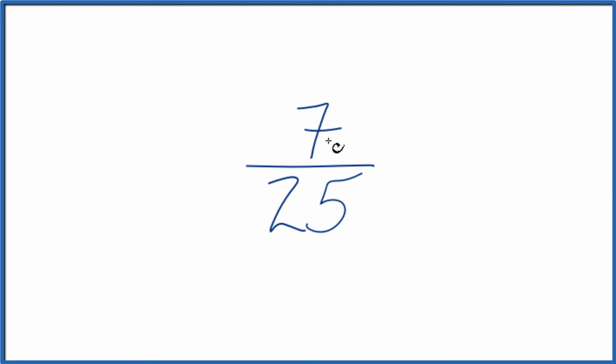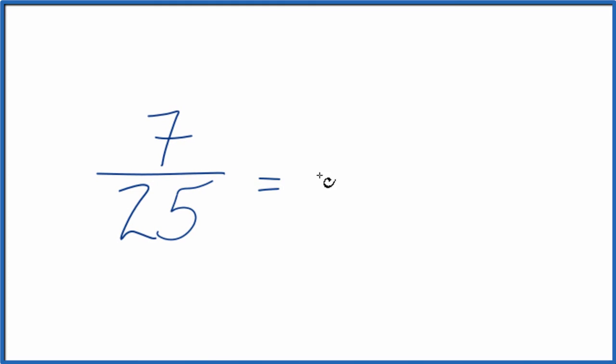You could just use your calculator: 7 divided by 25 gives you 0.28. So the fraction 7/25 equals the decimal 0.28.